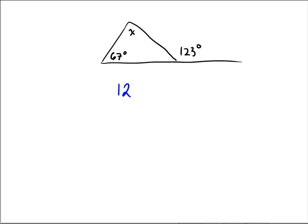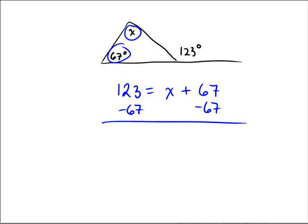Notice that 123, the exterior angle, is equal to the sum of the two remote interior angles, X and 67. If we now subtract 67 from both sides, and it looks like we'll have to do a little bit of regrouping here, 13 minus 7 is 6, and 11 minus 6 is 5. So it looks like we're getting 56 degrees as the missing angle X.